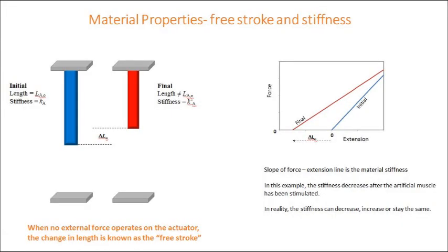So if we have an artificial muscle that contracts in length when it's stimulated, then the initial length represented here by L sub A0 and the initial stiffness K sub A change when the actuator is stimulated to the final conditions where the length has changed and probably also the stiffness has changed. When there's no external force applied to the actuator, the change in the actuation length is known as the free stroke. We approach the problem of determining the actuation properties by plotting the force extension curves in the initial and final state on the same chart, as shown in the top right of this screen.